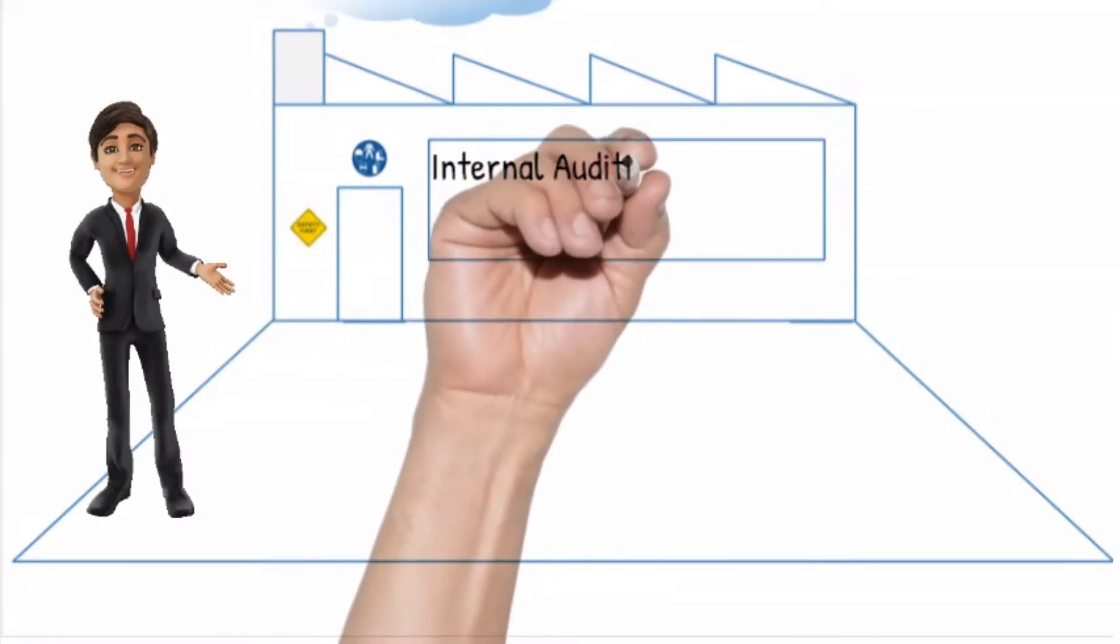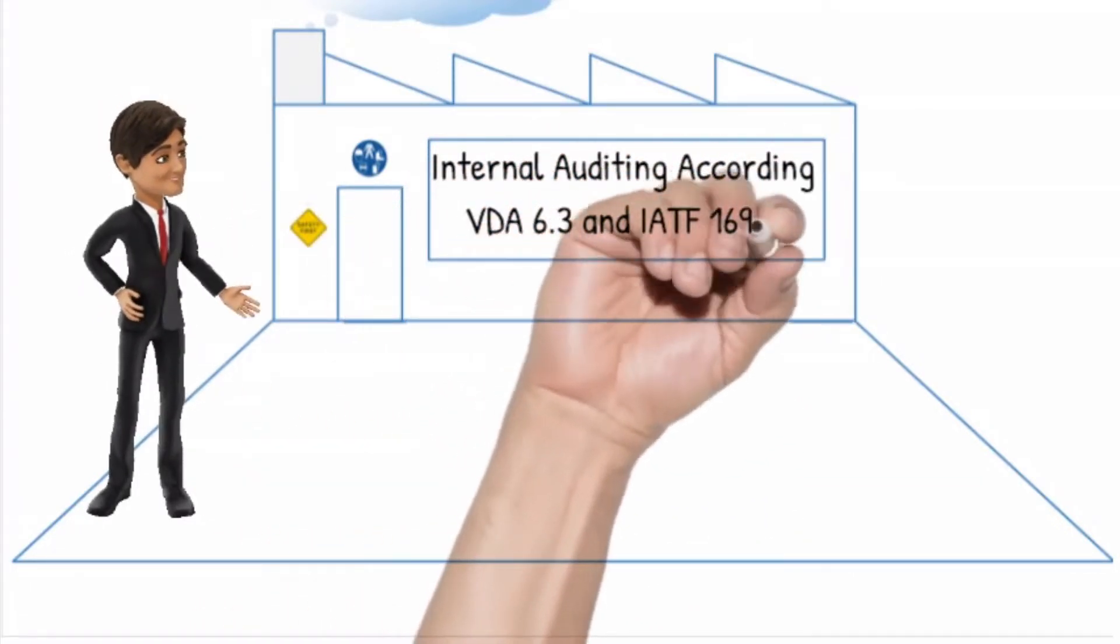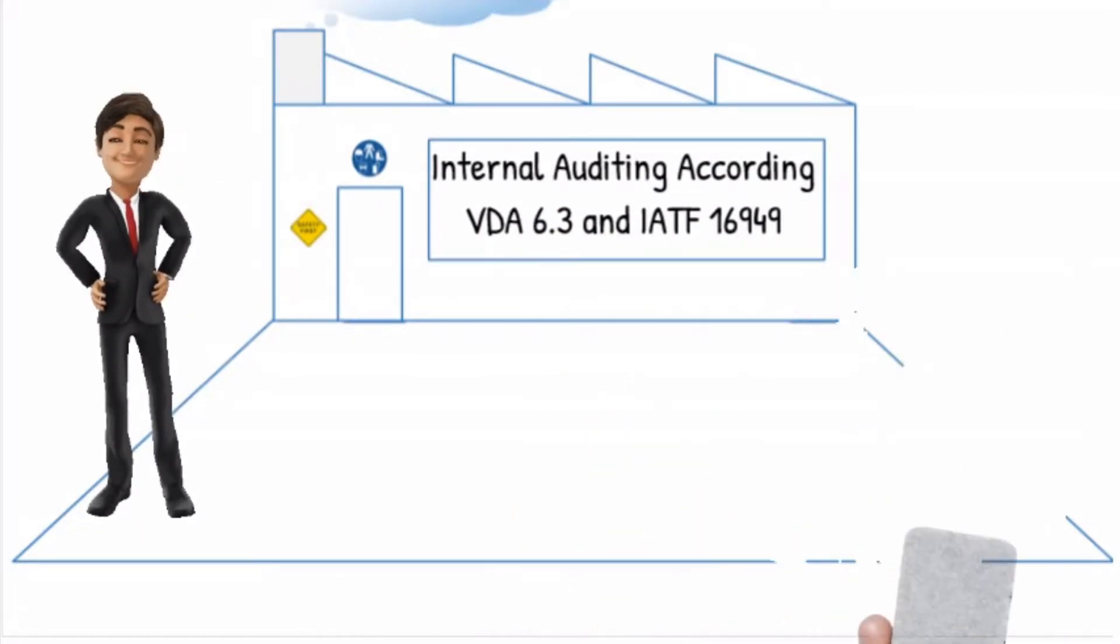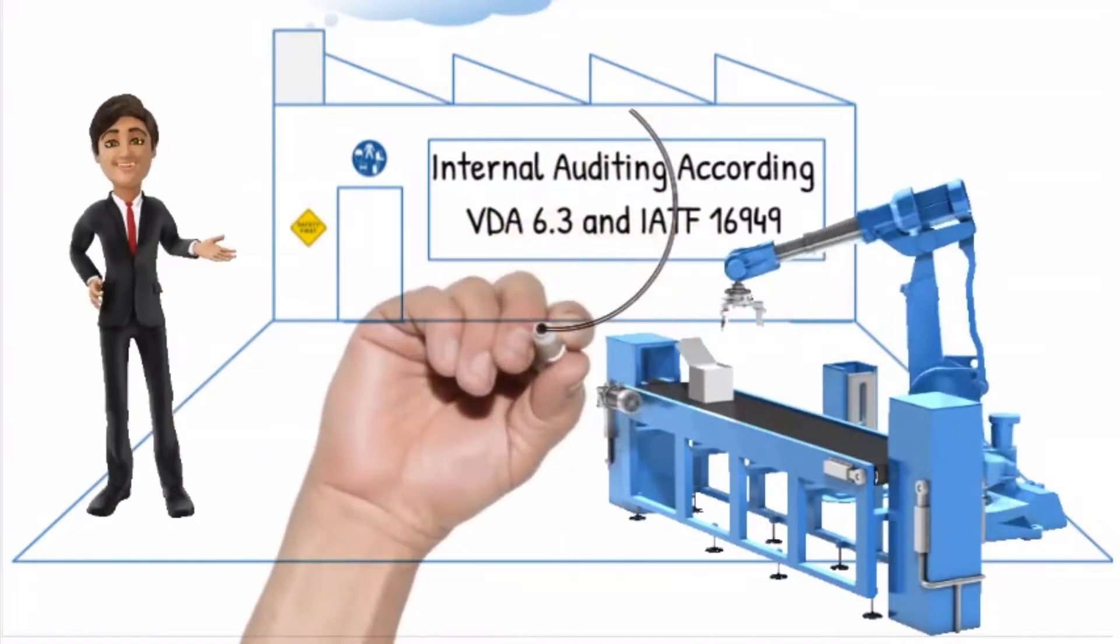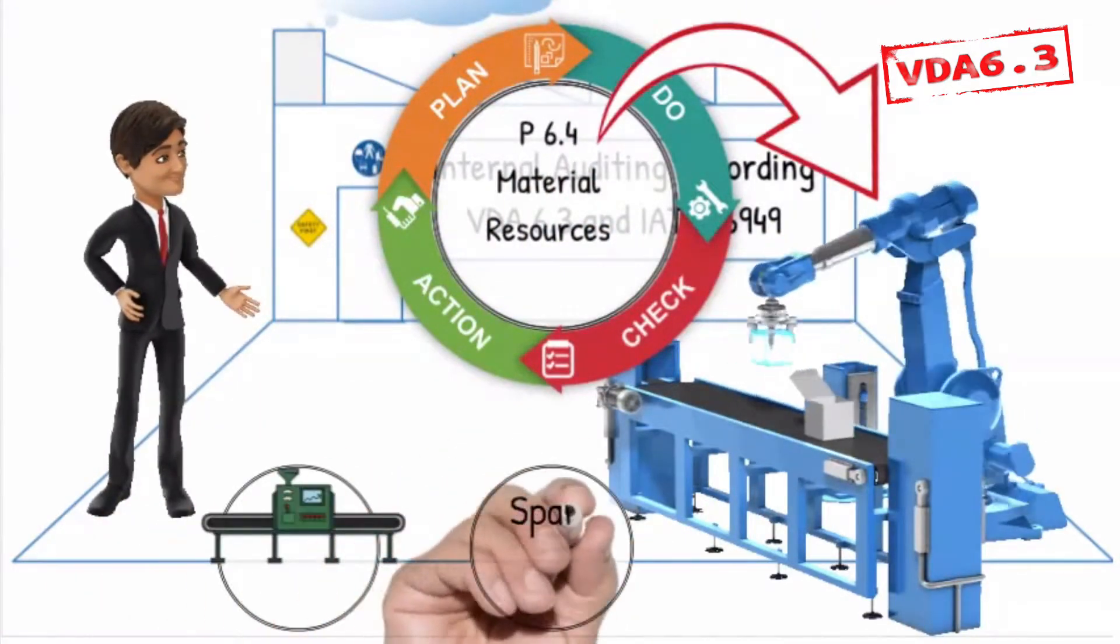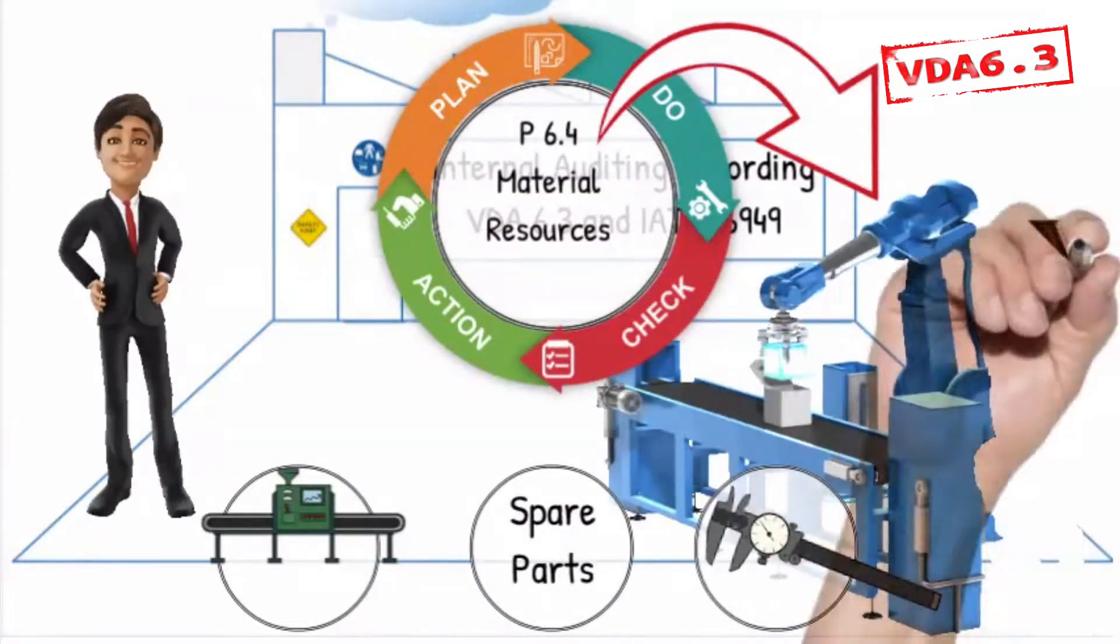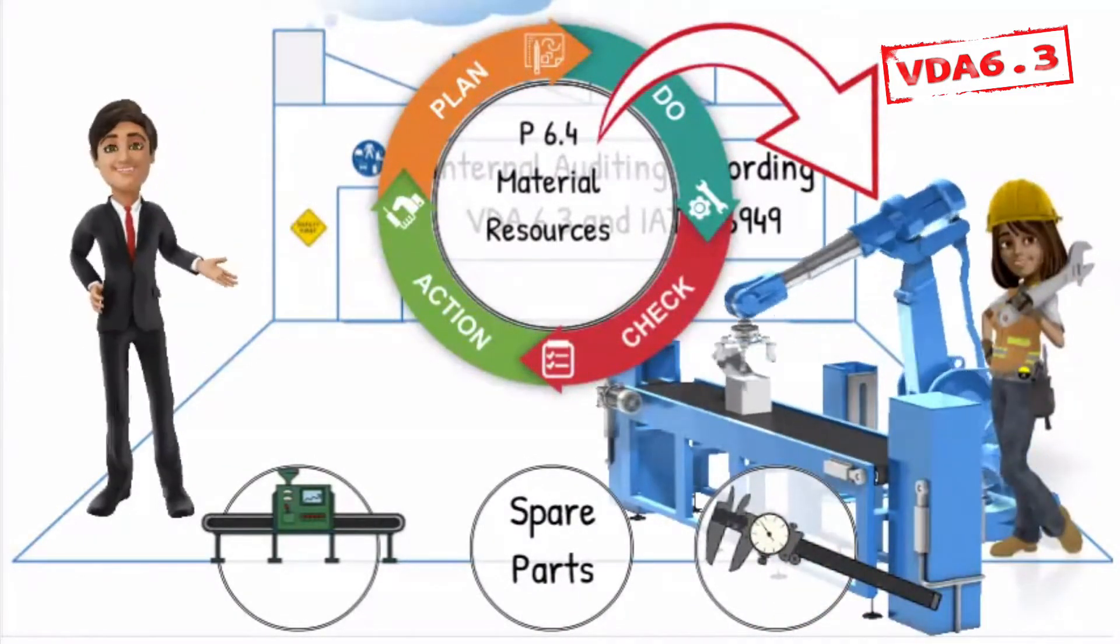Welcome to another short tutorial on internal auditing according to VDA 6.3 and IATF 16949. In this short video we will assess how good the equipment and work environment are managed according to VDA 6.3 P6.4, evaluating how the equipment, spare parts, and measuring equipment are planned, installed, released, and maintained to ensure that the internal and customer requirements will be achieved.